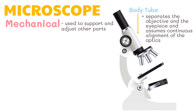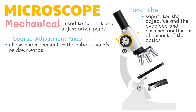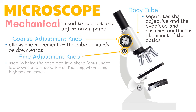Next, this is the coarse adjustment knob. It allows the movement of the tube upwards or downwards. On the other hand, the fine adjustment knob is used to bring the specimen into sharp focus under low power and is used for all focusing when using high power lenses.